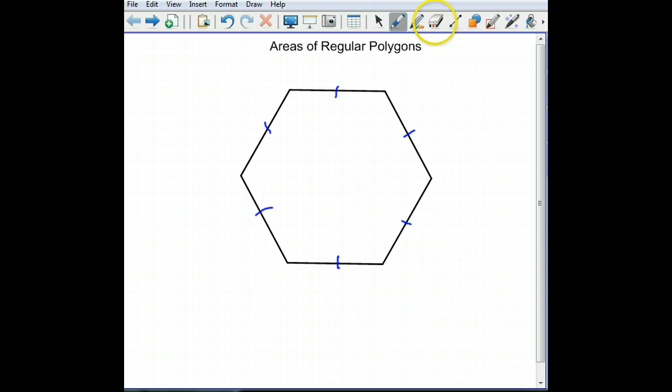Alright, so let's say that I've got a hexagon here, and each side is of length 10. And that's all I know. Is it possible for me to find the area? Believe it or not, it actually is.